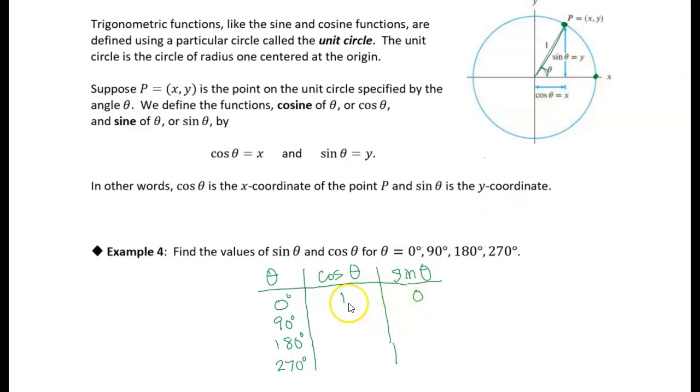And the x-coordinate is the cosine. The y-coordinate is the sine. All right, so the cosine of 0 degrees is 1, and the sine of 0 degrees is 0. All right.